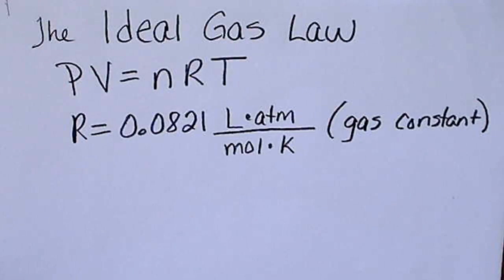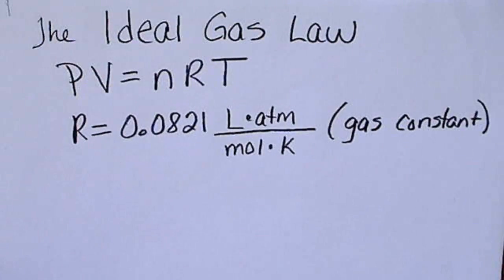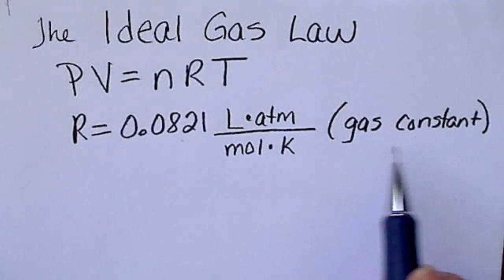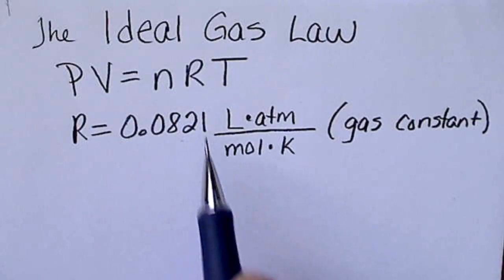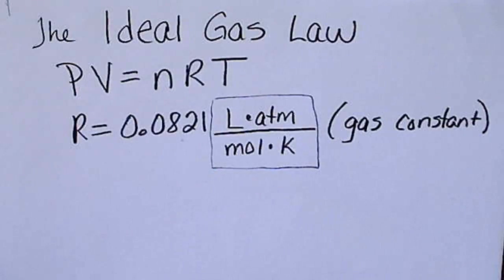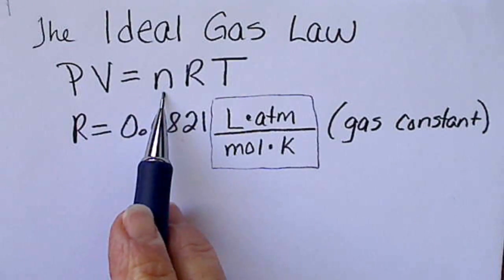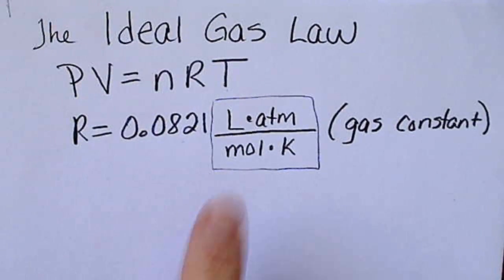The ideal gas law can be written as follows: PV equals nRT, and R is always the same number. It's referred to as the gas constant and it has the value of 0.0821, and it has four units attached to it because the pressure, the volume, the n which is number of moles, and the T, those units have to be consistent with this constant.